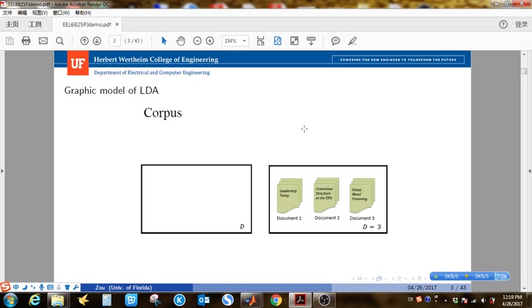So I am going to show the graphic model of LDA step-by-step. A corpus contains some documents. In this example, D equals three means there are three documents.